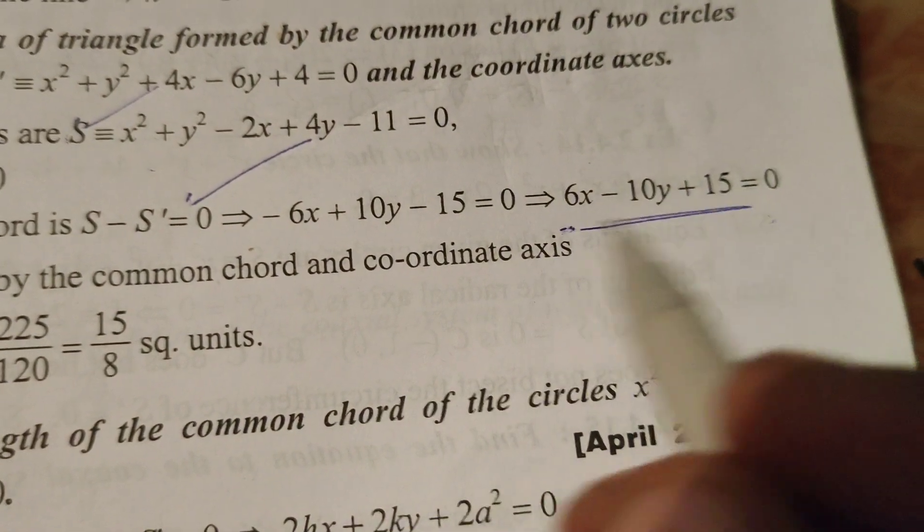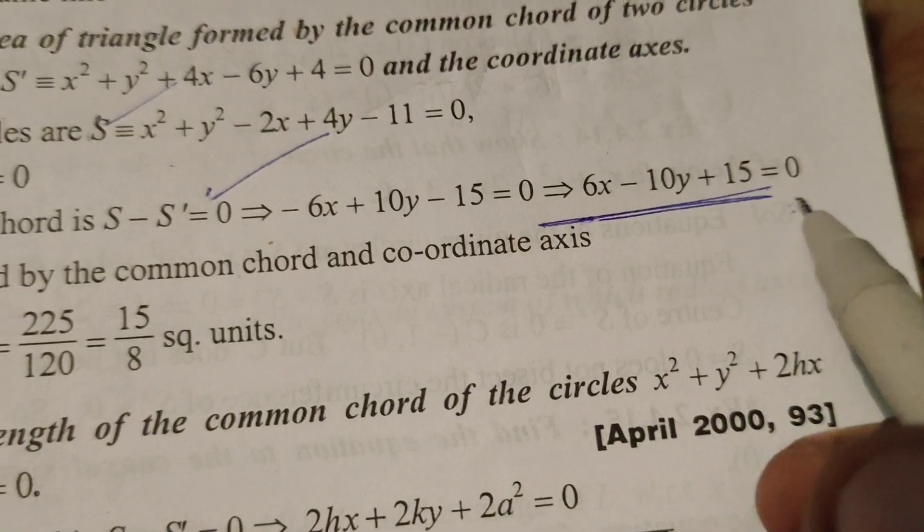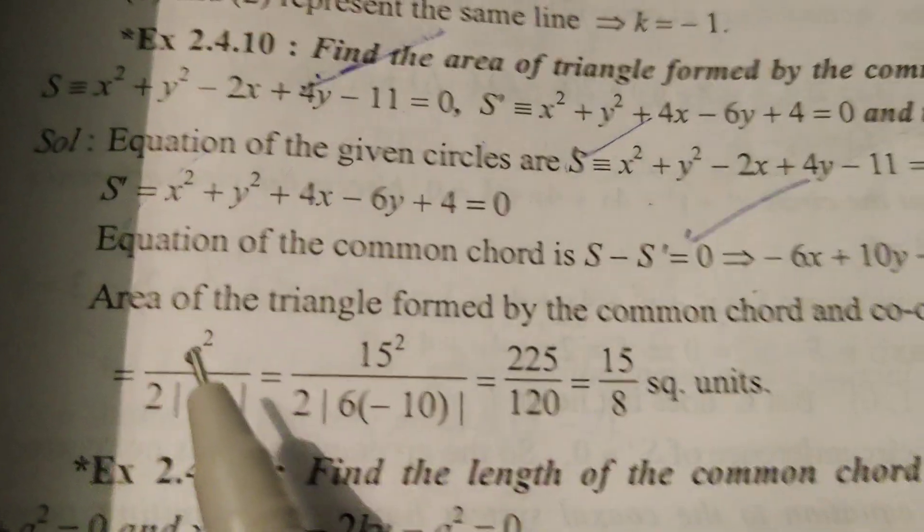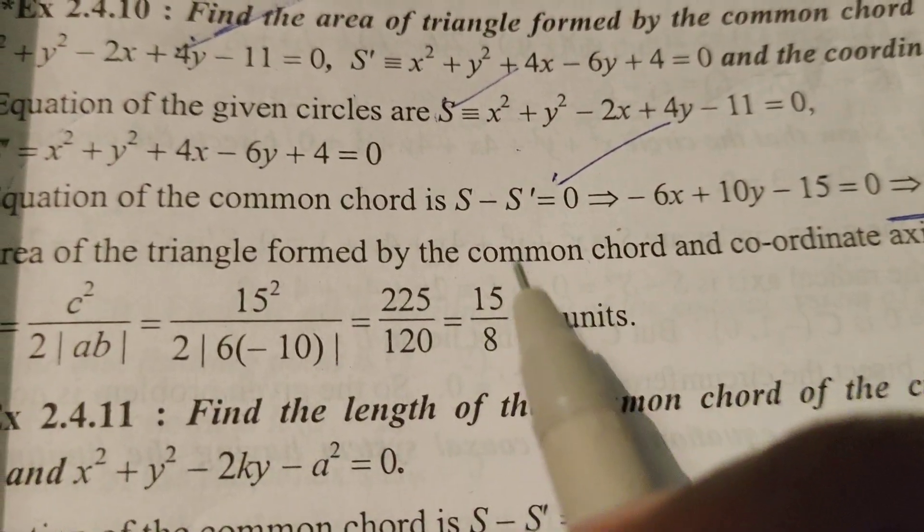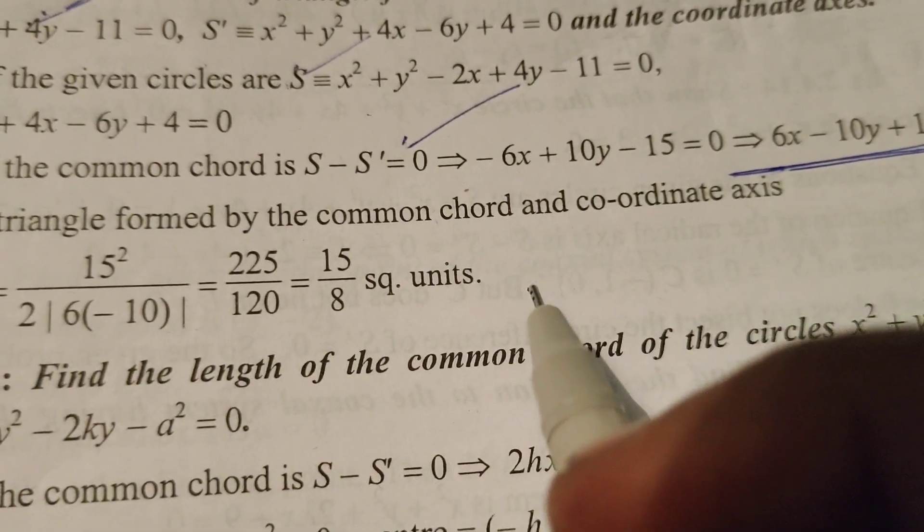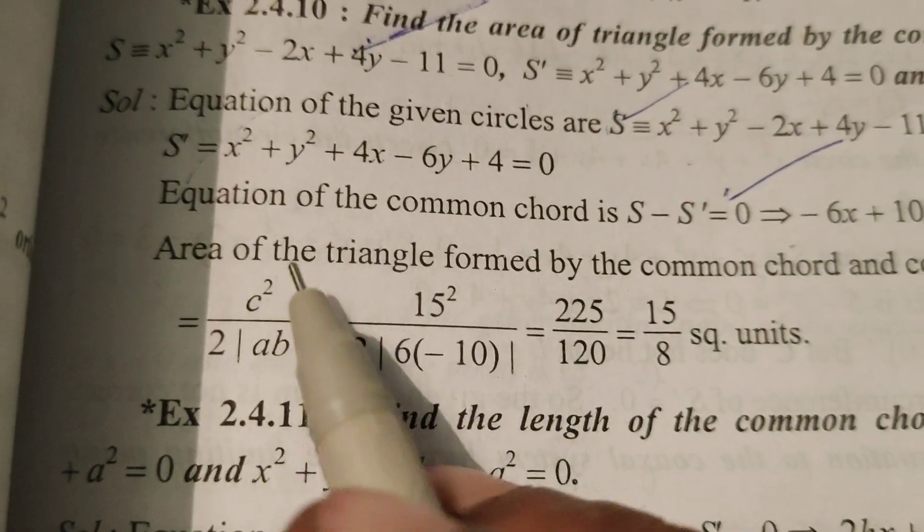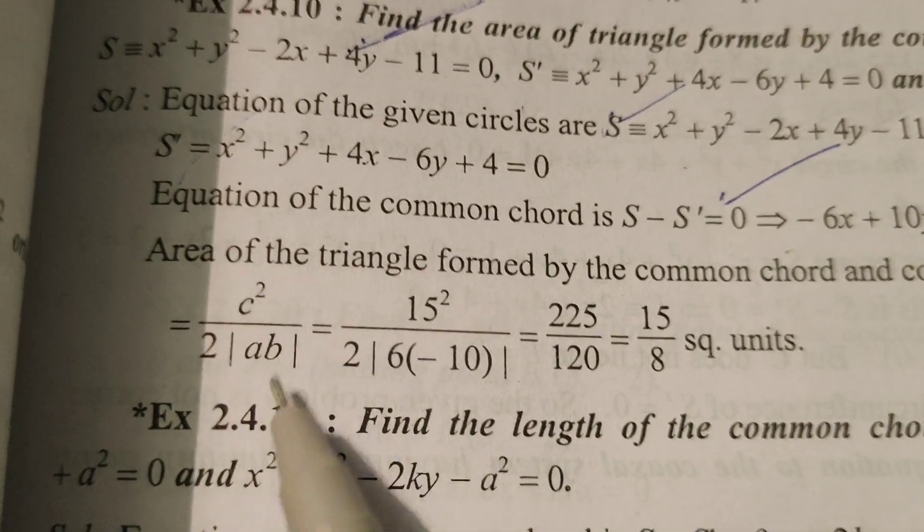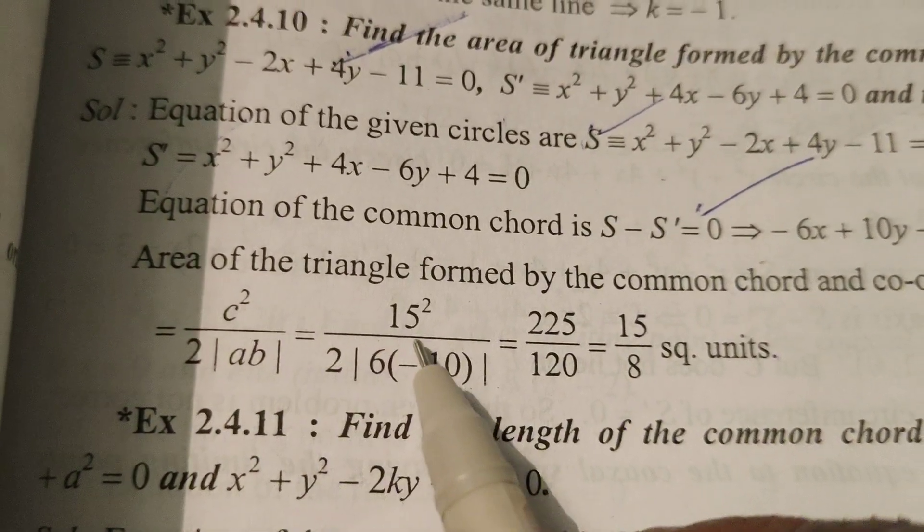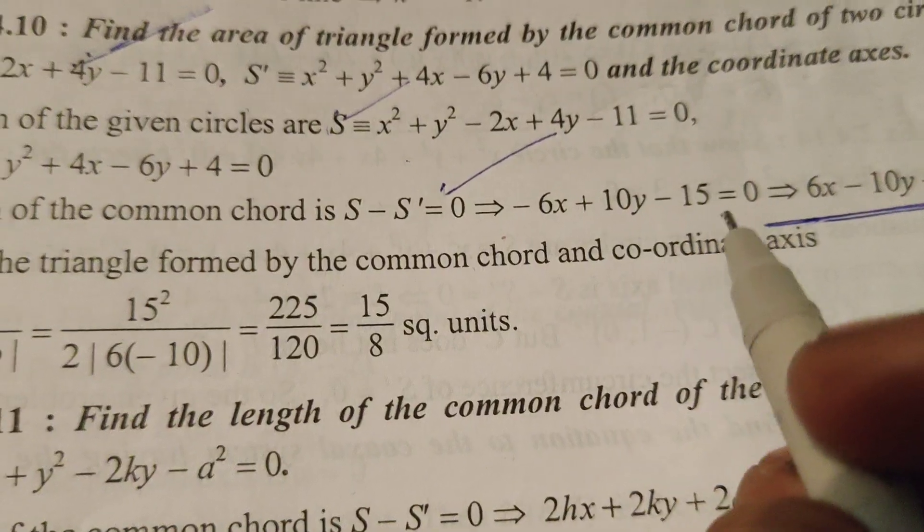Then we will get 6x minus 10y plus 15 equals 0. Area of the triangle formed by the common chord and coordinate axis is, by formula, c square by 2 modulus AB. Then what is c here? 15.